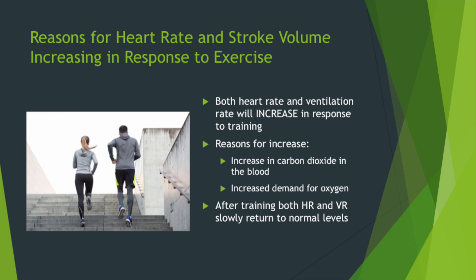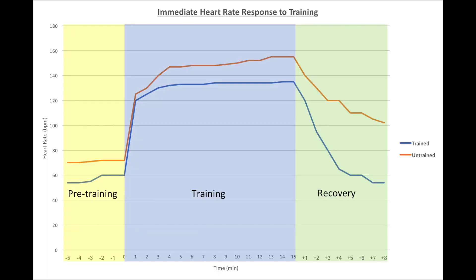Ventilation rate responds similarly, as it removes carbon dioxide through exhaling. By increasing your respiratory rate, your body increases the amount of carbon dioxide removed while also increasing the amount of oxygen inspired. Heart rate can be seen to increase at the beginning of training, rising quickly to around 120 beats per minute. Once training is finished, the trained athlete's heart rate returns to normal levels faster than the untrained athlete. Note also that the trained athlete has a lower resting heart rate and returns to normal rates faster.